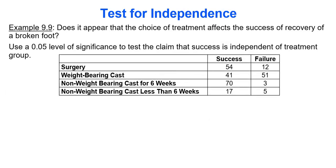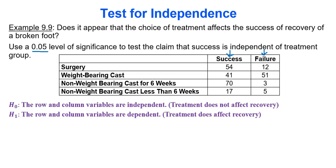Does it appear that the choice of treatment affects the successful recovery of a broken foot? Use a 0.05 level of significance to test the claim that success is independent of treatment group. We have surgery, weight-bearing cast, non-weight-bearing cast for six weeks, and non-weight-bearing cast less than six weeks, along with the number of successes and failures. The null hypothesis is that treatment does not affect recovery; the alternative is that treatment does affect recovery. We just need to type this information into Google Sheets, get our p-value, compare it to alpha, and be done.